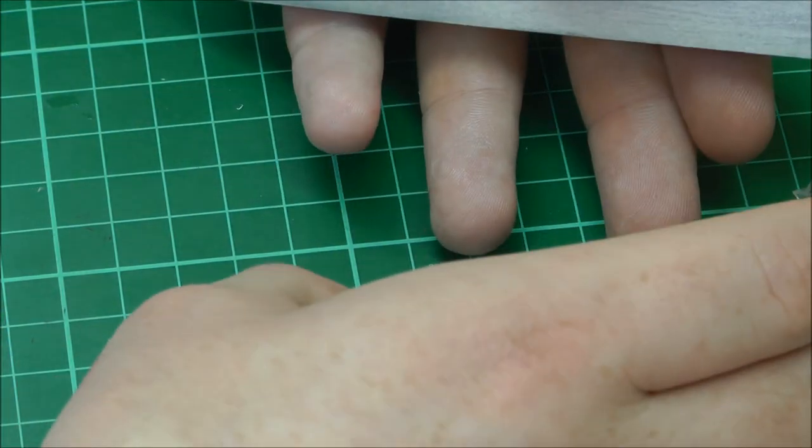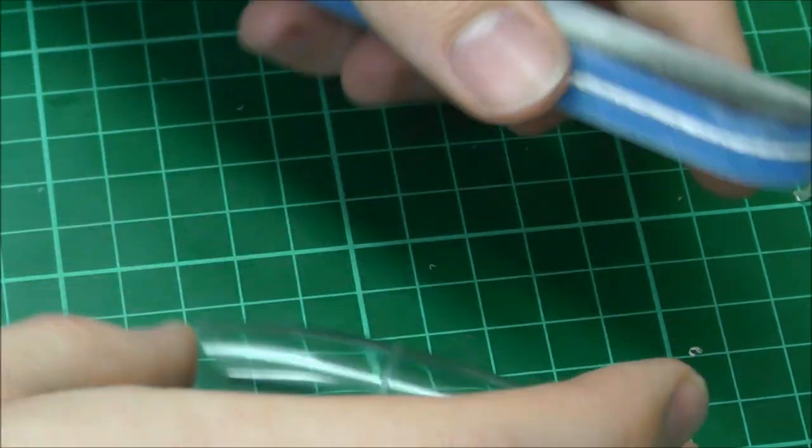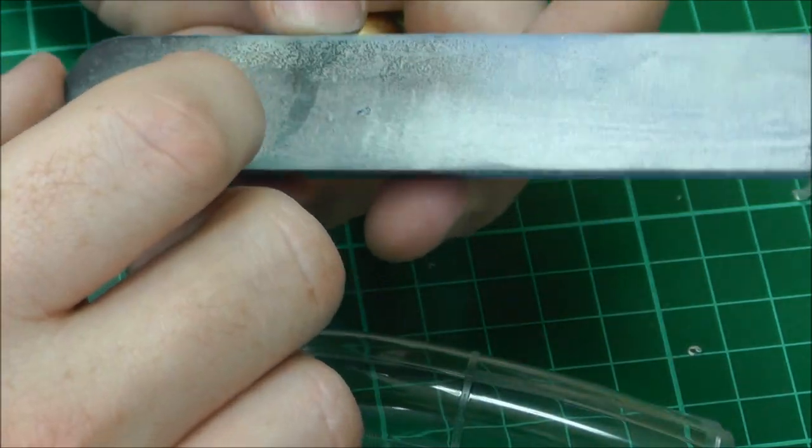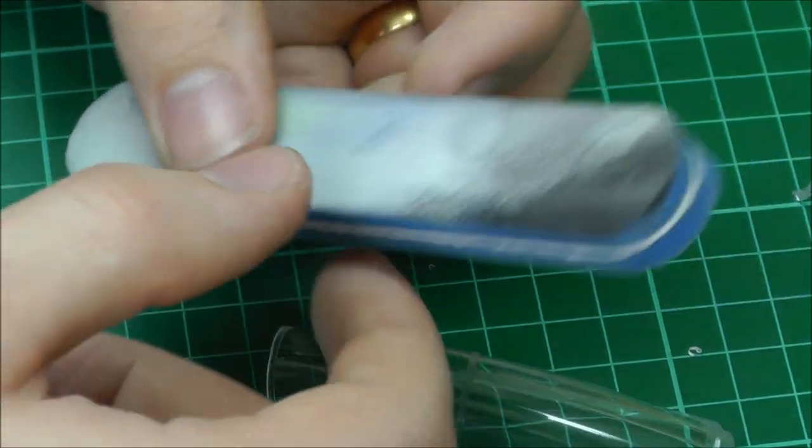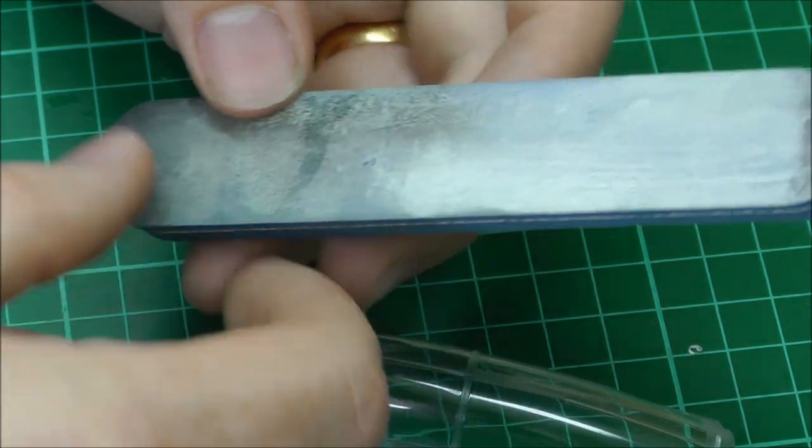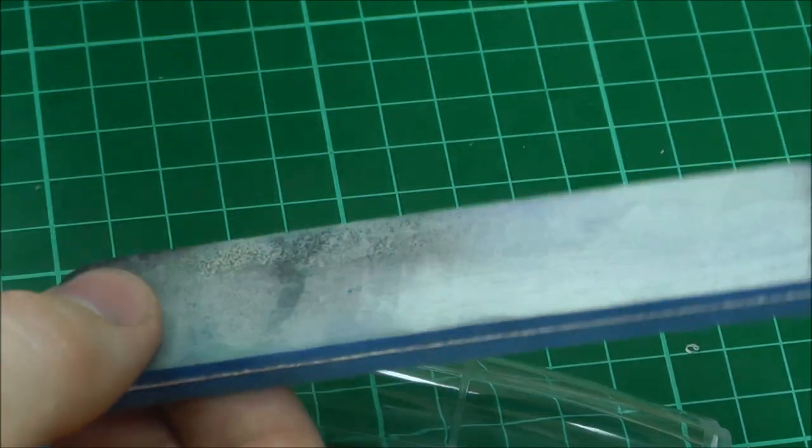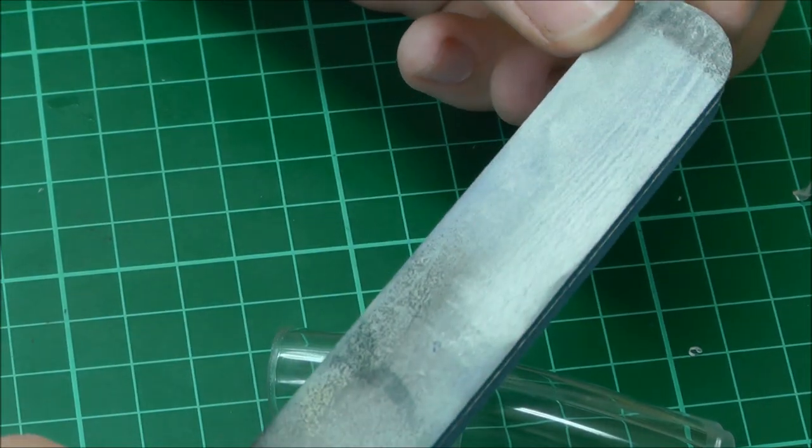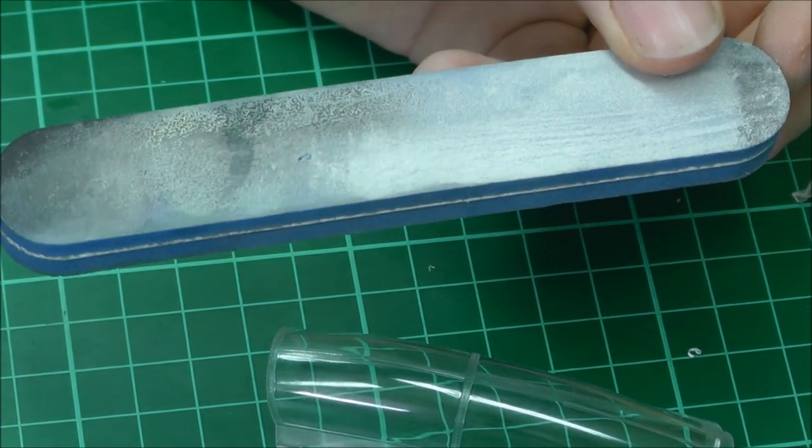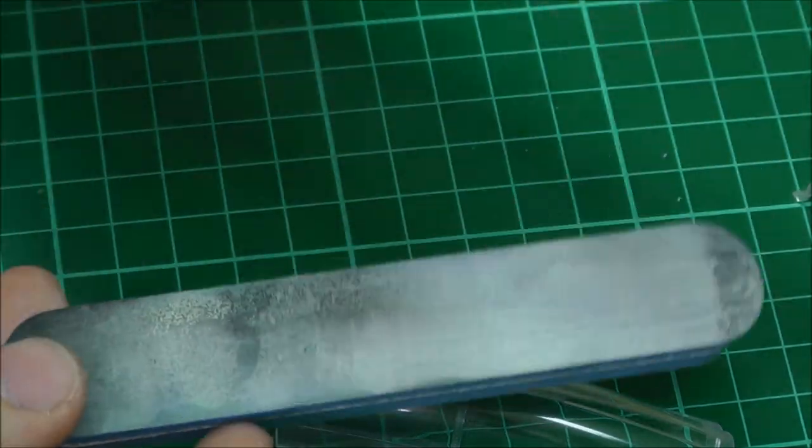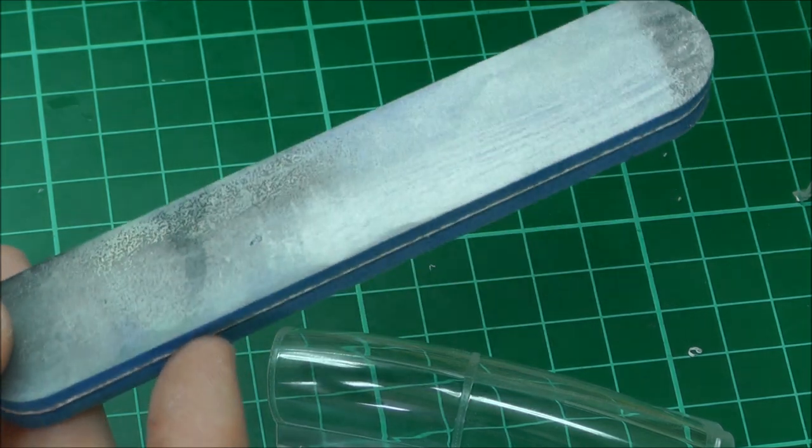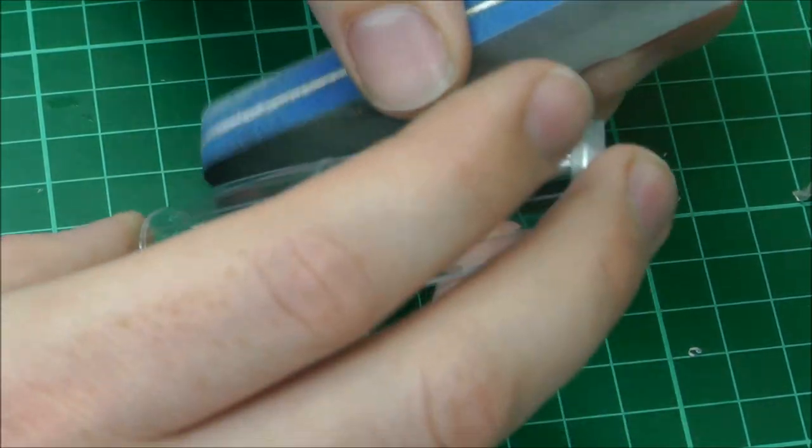This is where we come in with some nice light sanding sticks. I've got here a sanding stick by Model Design Construction. It's a bit old and a bit used, and the more older and used a sanding stick gets, although this is supposed to be a fine grit, because it's old and used it's going to be even finer. We really want it to be nice and fine.